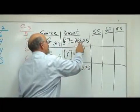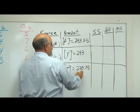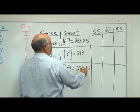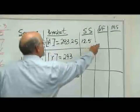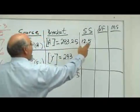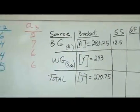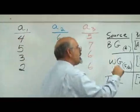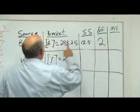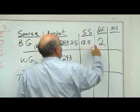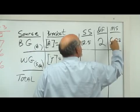The sum of squares for the between groups is A minus T. So it's 283.25 minus 270.75. That looks like 12.5. The degrees of freedom for the between group is A minus 1. A is the number of groups. So 3 groups minus 1. You've got 2 degrees of freedom. The mean square for the between groups is the sum of squares divided by the degrees of freedom. And that looks like 6.25.